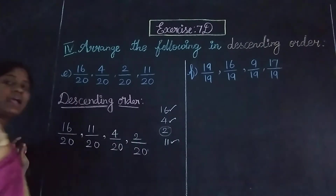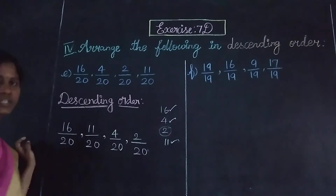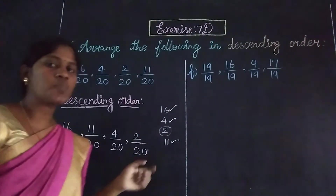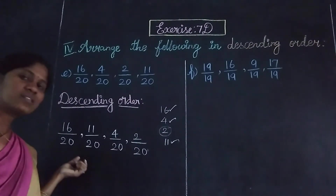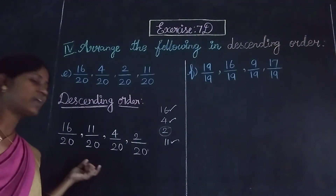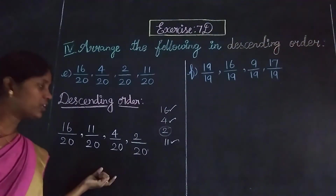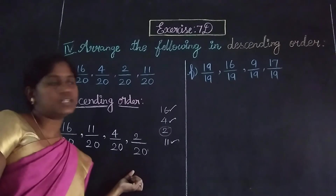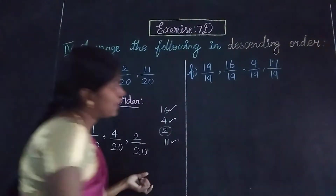So, biggest to smallest. The descending order is: 16 by 20, 11 by 20, 4 by 20, and 2 by 20.